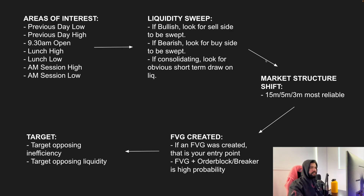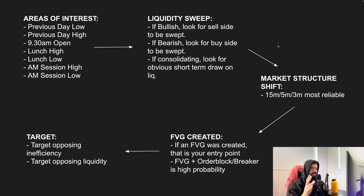This is the old reliable - the ICT model that has never seemed to fail me. I got a little confused recently trying to throw in extra ICT concepts and ended up with over-analysis, but I found time and again that the 2022 model is the most simple and easiest mechanical setup to use. By mechanical I mean there are clear-cut rules, and if those conditions are not met, there's no trade - which works better for me than discretionary trading.